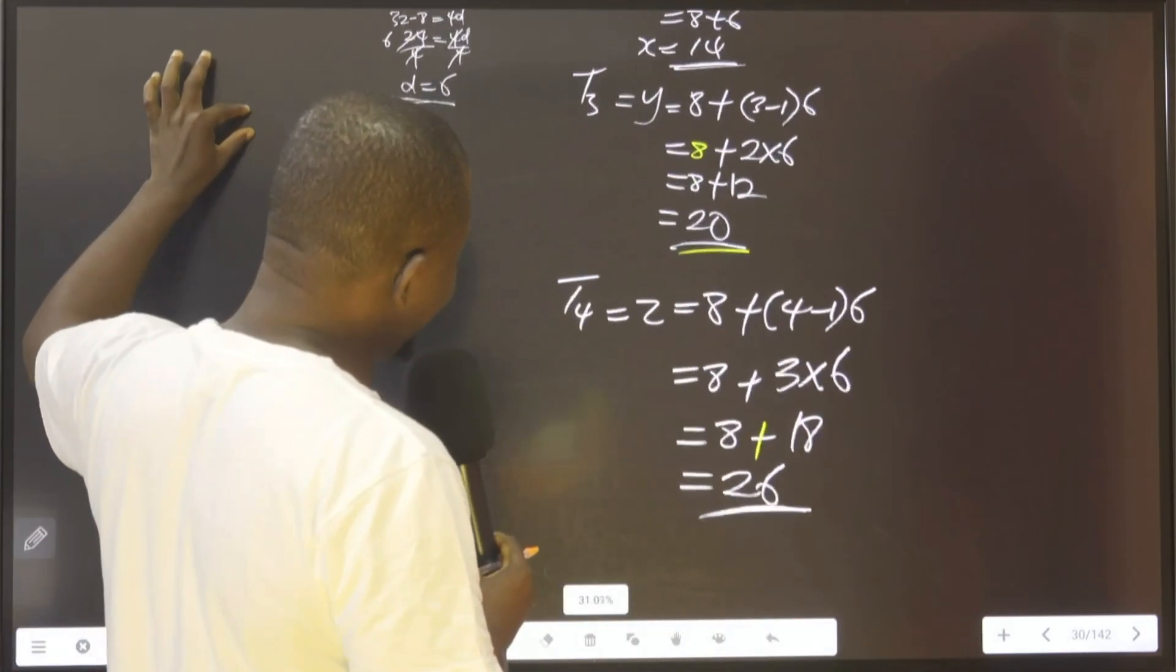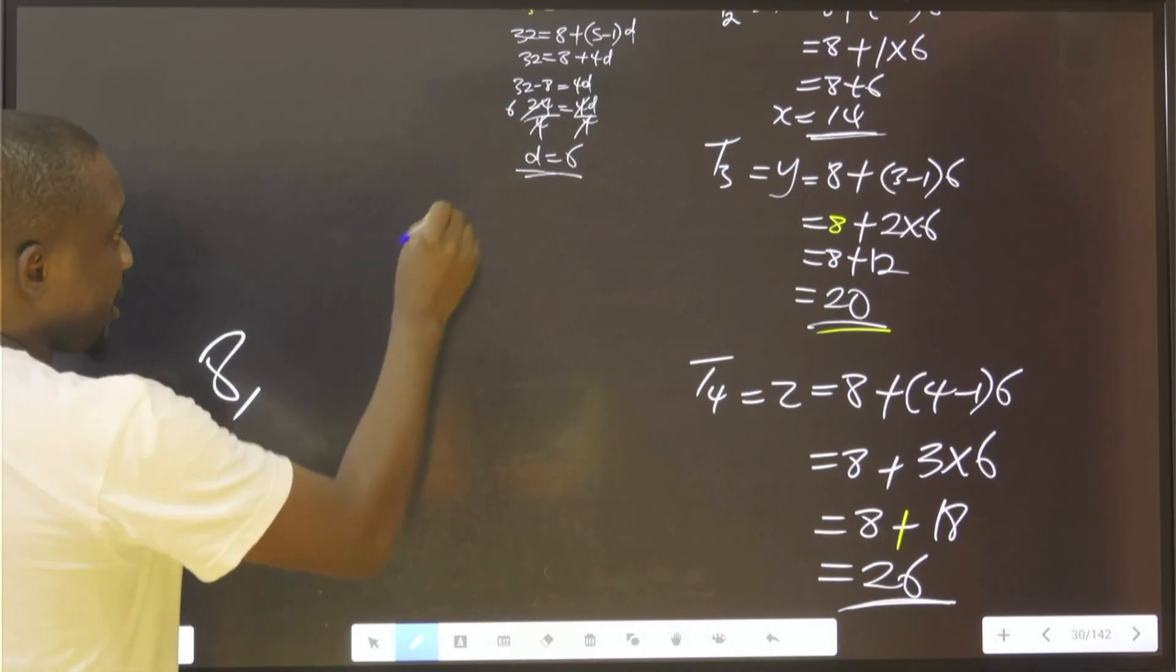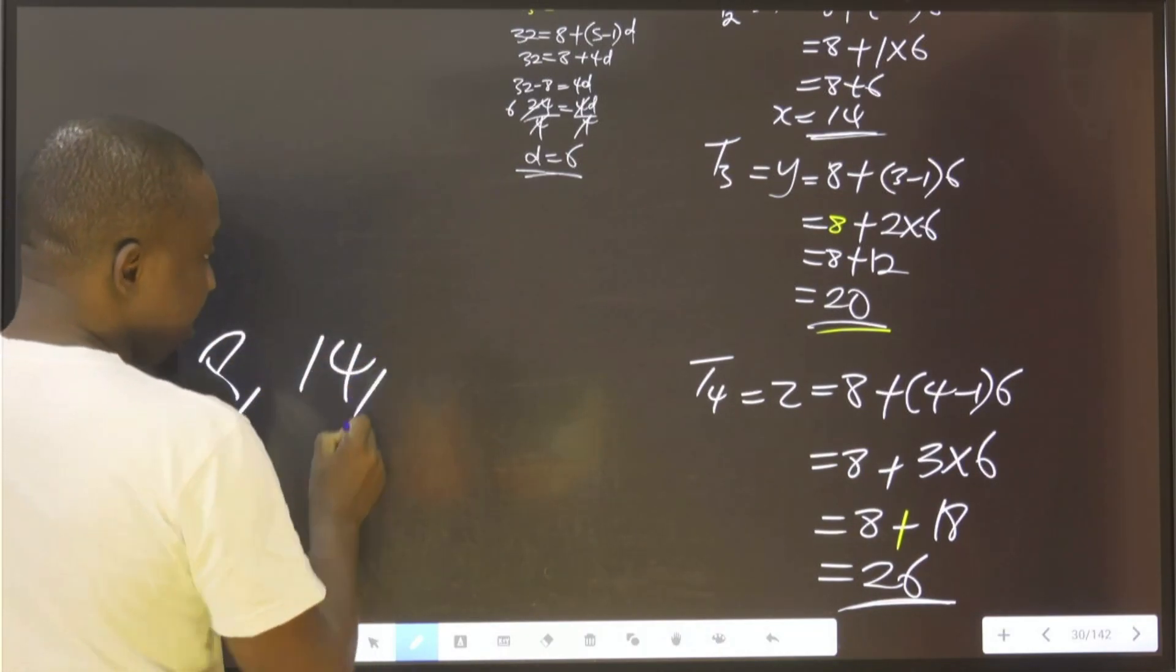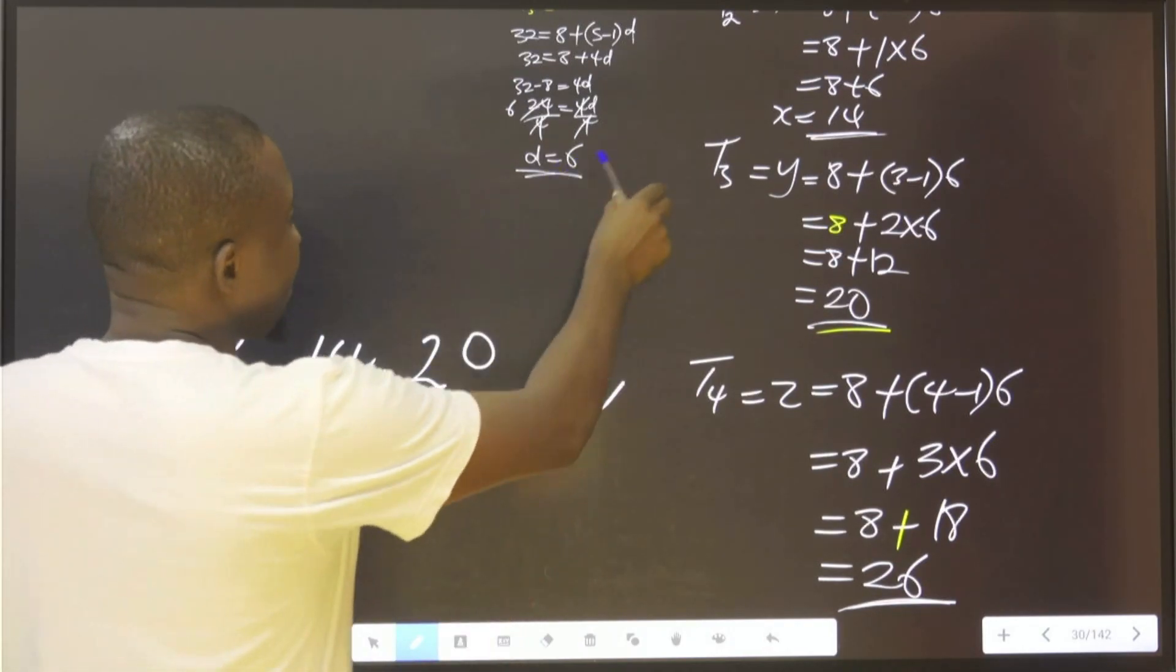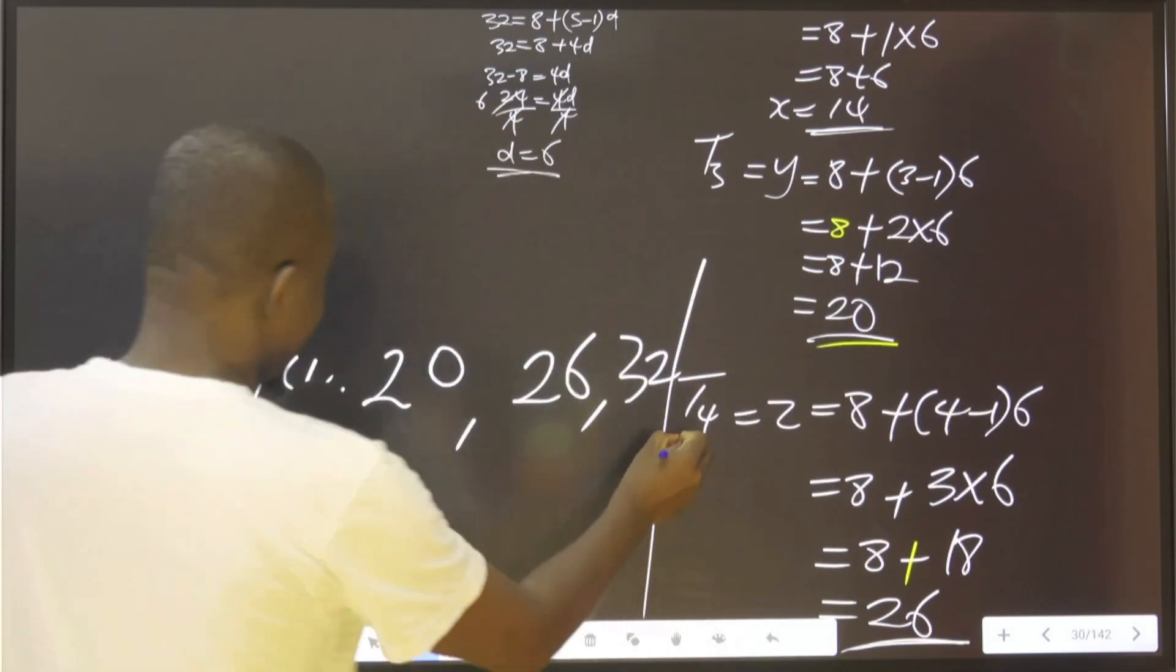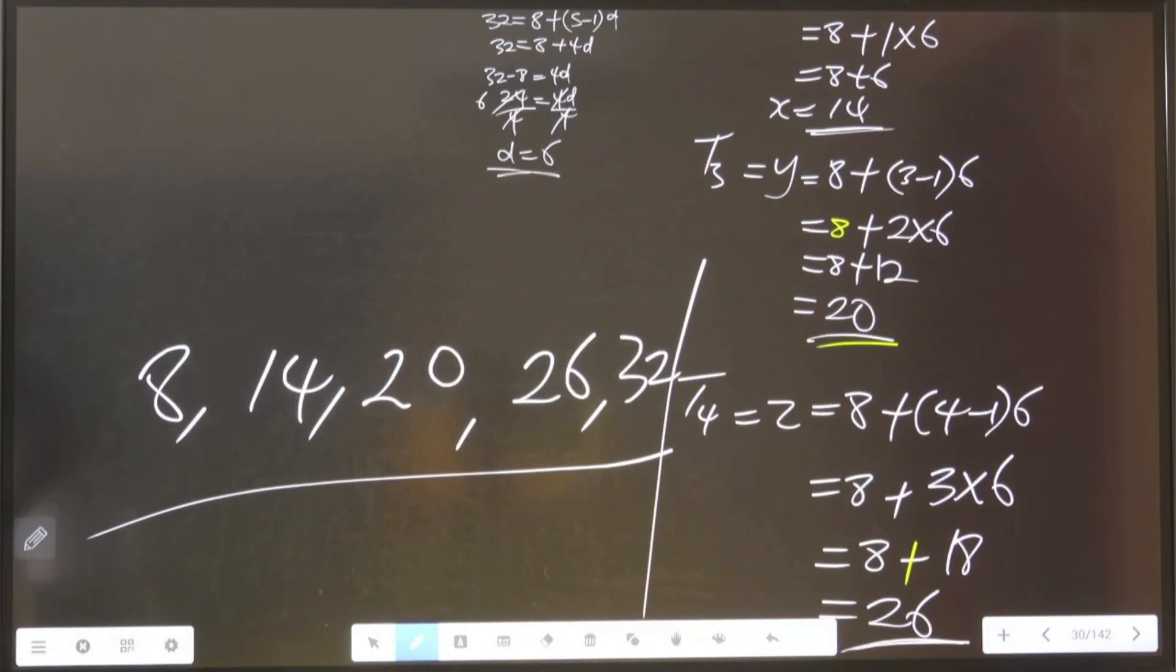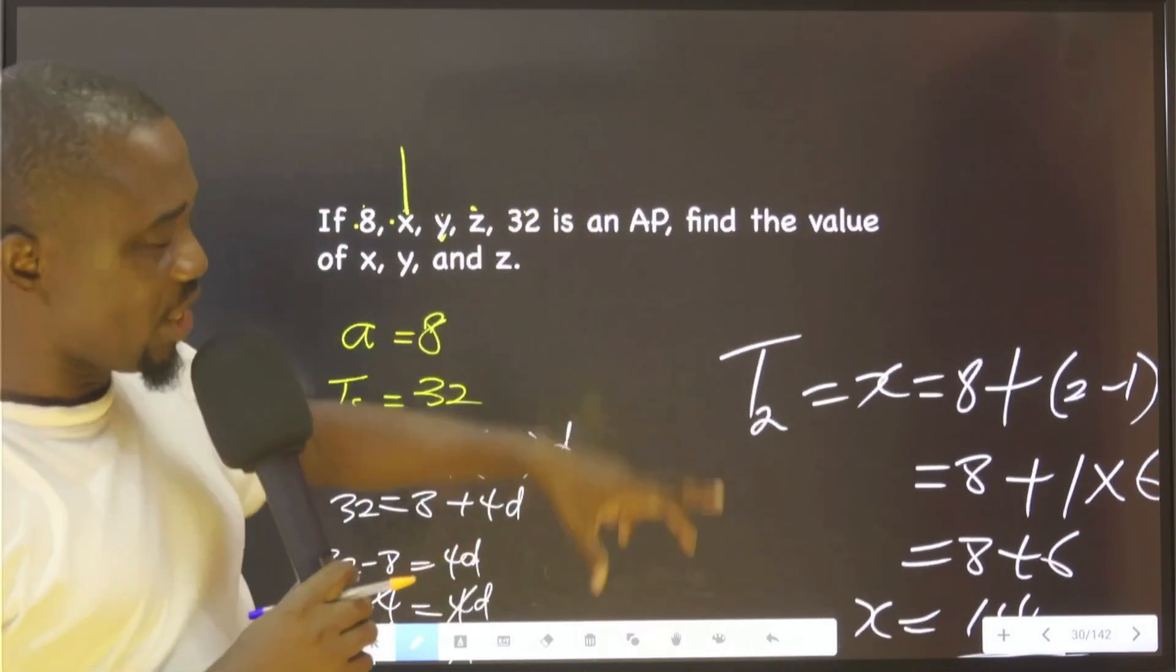It means therefore, if you want to arrange everything, the first term is 8, the second term is 14, 20, 26, and finally we have 32 here. These are the terms that are involved in this arithmetic progression.